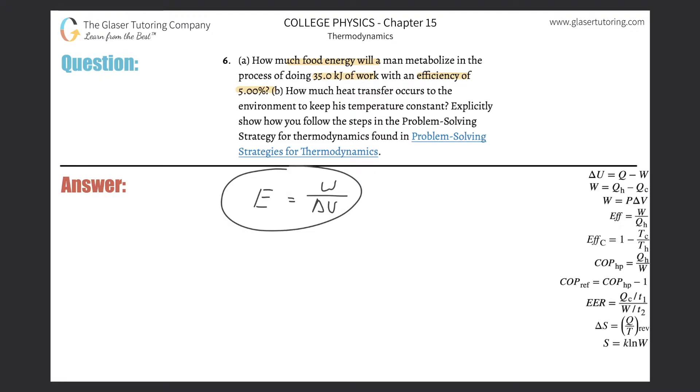Before I do that, let me ask: what variable am I looking for? I'm really looking for how much food energy will a man metabolize. That's really equal to the total internal change, because whenever someone does work, not only is work being done by the body itself, but also heat is being generated. I spoke about that in detail in number five. Basically, I need to solve this for change in internal energy.